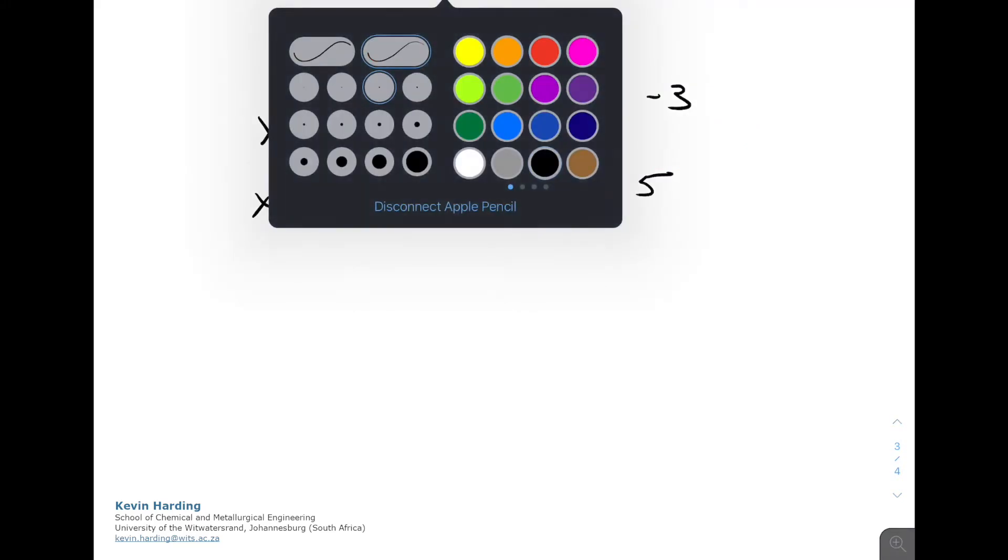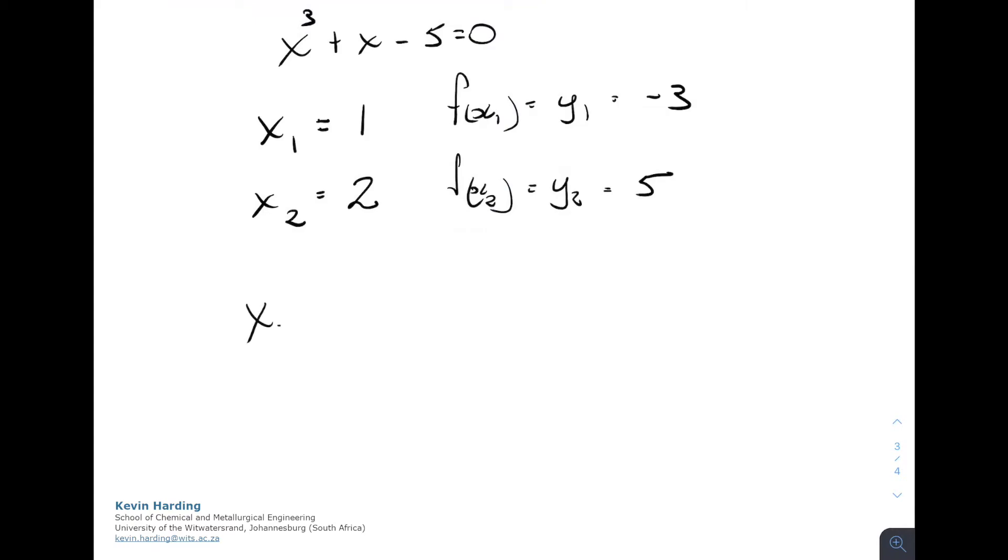Okay, so once we have that, we now need to calculate our x3 value. And that was from the linear interpolation where we said that the x value, x3, was going to come from x1 minus y1 multiplied by the x2 minus x1 divided by y2 minus y1. If I put all of those values into the equation, we get a value for x3 equal to 1.375.